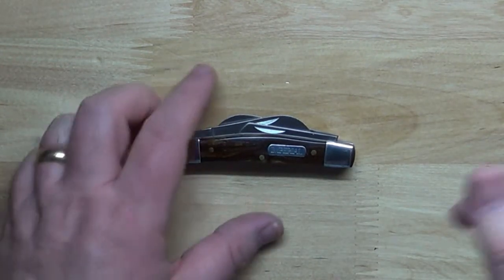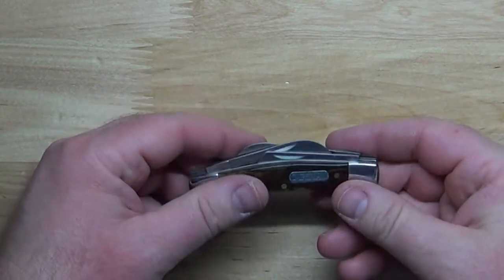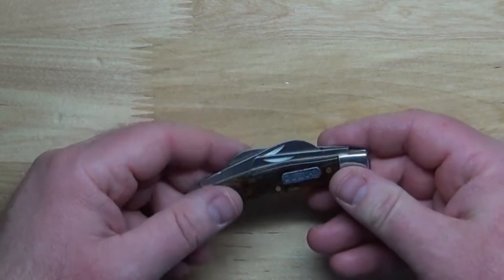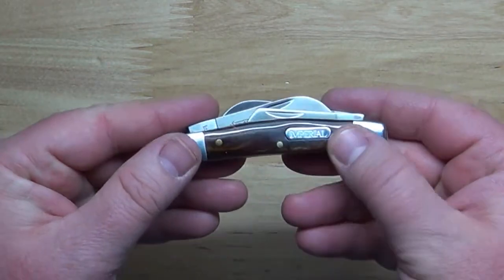This is 400 stainless steel blades and we got that what they call the amber swirl handles, stainless steel bolsters and pins.